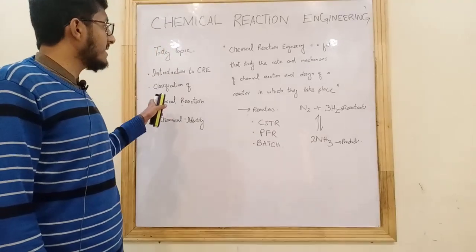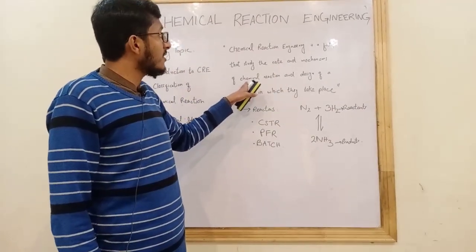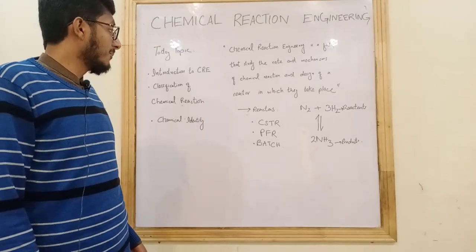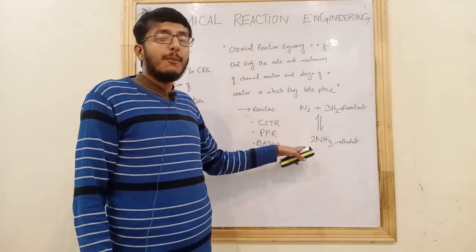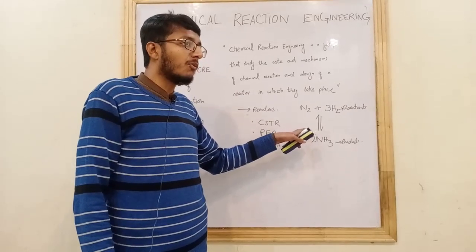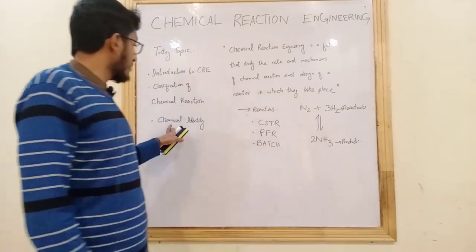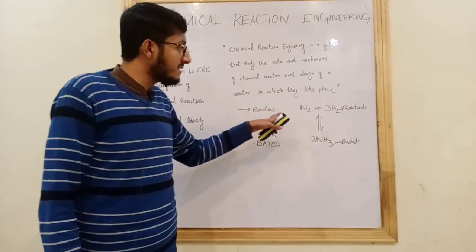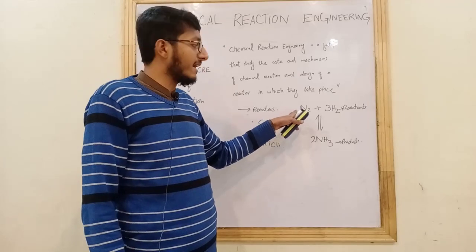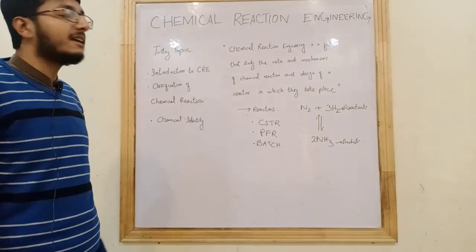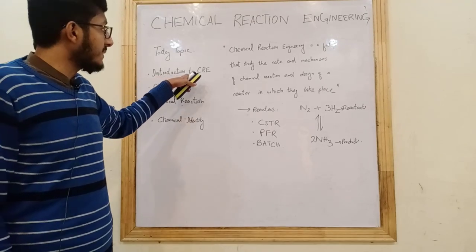The purpose of CRE in industries is to deal with chemical reaction rate and reaction mechanism. When N2 reacts with 3H2 to form 2NH3, reactants are converted into products. Species change their chemical identity as they convert into products — this concept of chemical identity is central to chemical reaction engineering.